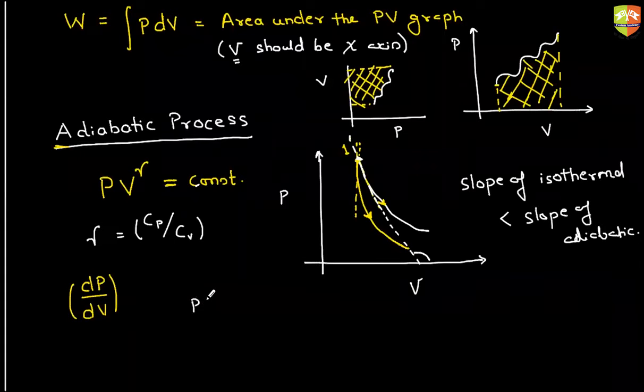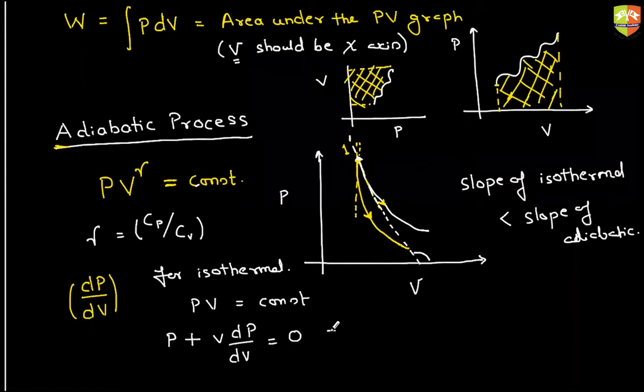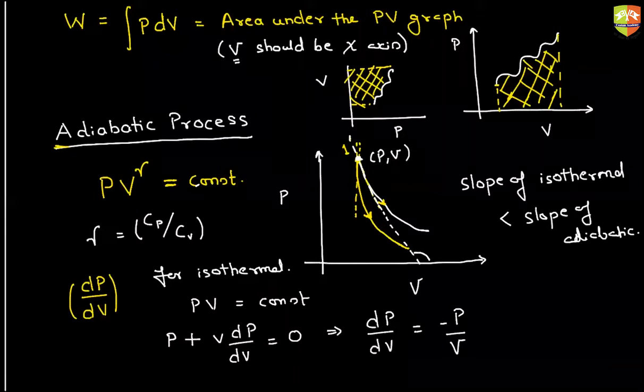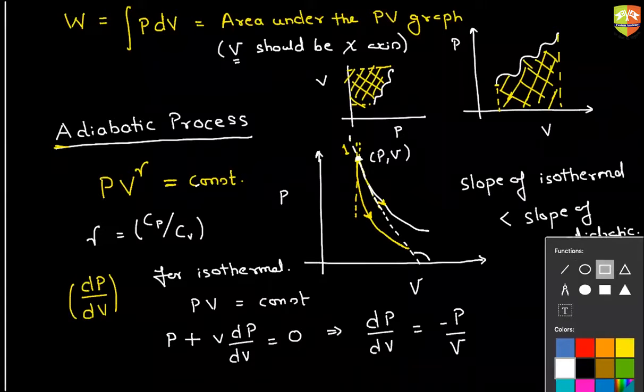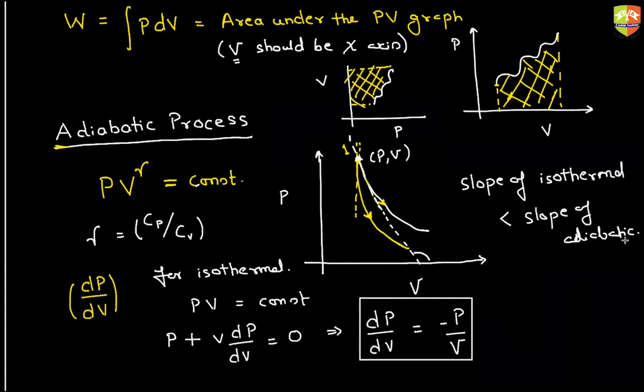Let me do it now. Pressure into volume is constant for isothermal. So if I differentiate it with respect to volume, I'll get P plus V dP by dV is zero. So I'm getting dP by dV to be equal to minus P by V. So at a point where the pressure and volume is P and V, the slope of the isothermal process is minus P by V.